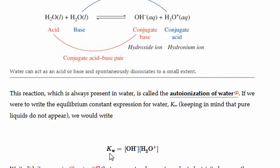We write the equilibrium expression for this process as capital K subscript W for water is equal to the concentration of hydroxide times the concentration of hydronium. Since water is a pure liquid, we do not include it in the expression.